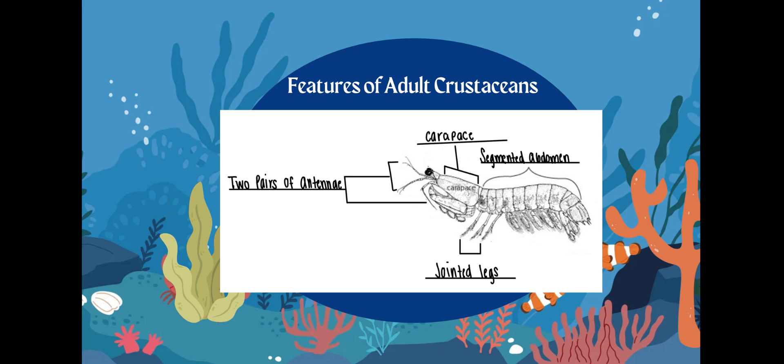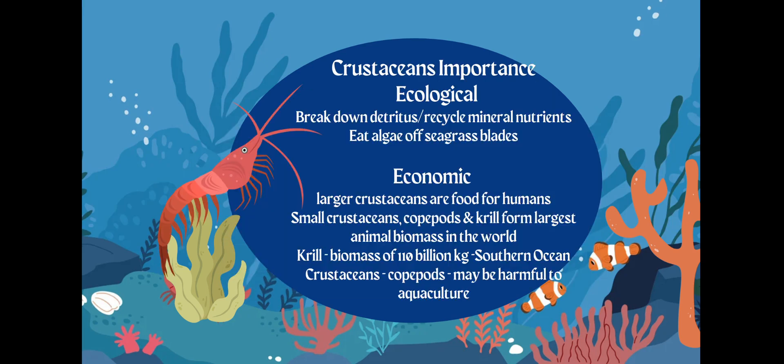You should know the features of an adult crustacean. Now, why are crustaceans important? They're going to break down detritus — basically things that are decaying, dying, and sinking to the bottom — and they're actually going to recycle those mineral nutrients back into the environment. That connects back to chapter three where we talked about nutrients: carbon, magnesium, phosphorus, sulfur, nitrogen.